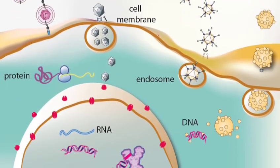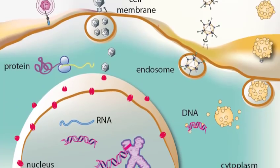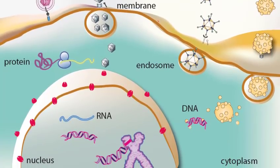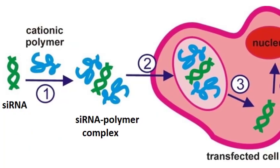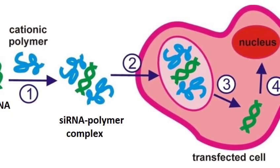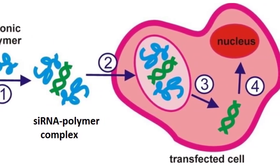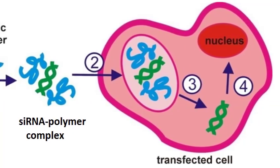In contrast to viral carriers, non-viral delivery systems draw attention in terms of safer carriers. Among non-viral delivery systems, cationic polymers stand out as carriers for both siRNA and plasmid DNA.